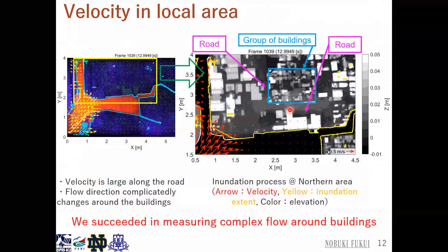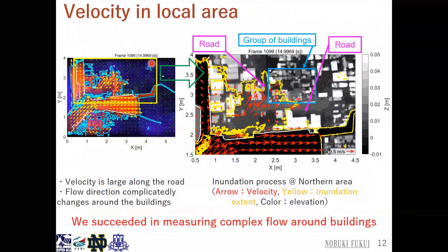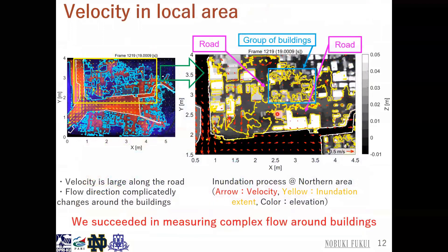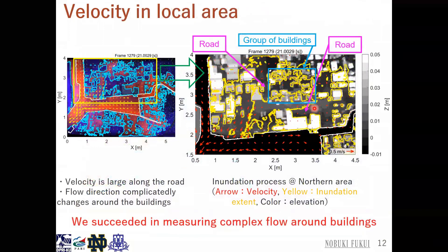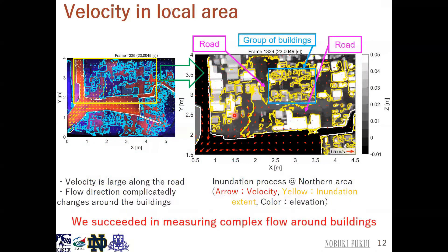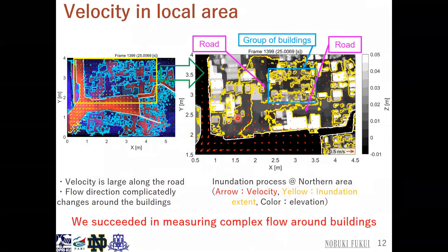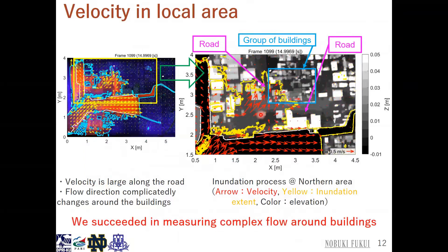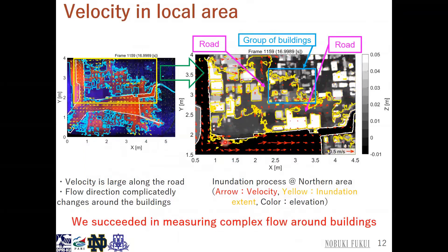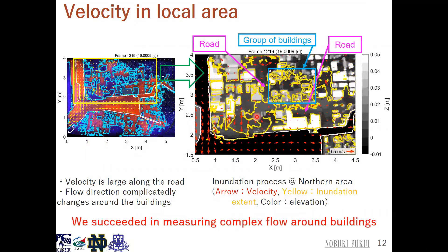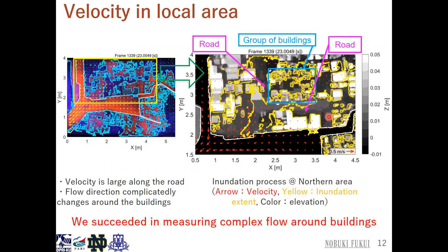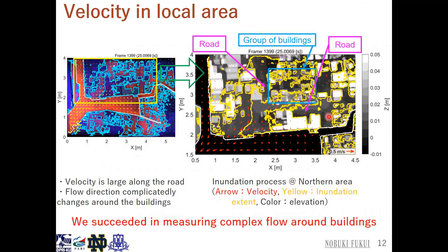Let me focus on the north area of the port. We can see the velocity is large around the road. Also, the flow direction changes complicatedly around the buildings — for example, flow changes from the northeast direction to north and east directions. We succeeded in measuring complex flow around buildings.